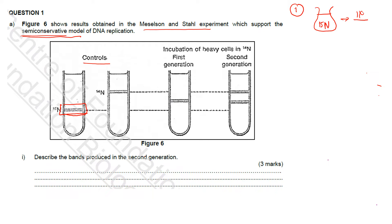We consider this as the parental DNA. The parental DNA, indicated in red, consists of nitrogen-15 for both strands. When centrifuged, it appears at the bottom of the test tube. The other control is the one that consists of nitrogen-14, the original nitrogen. When centrifuged, it produces a DNA band at the top of the test tube because it is lighter.